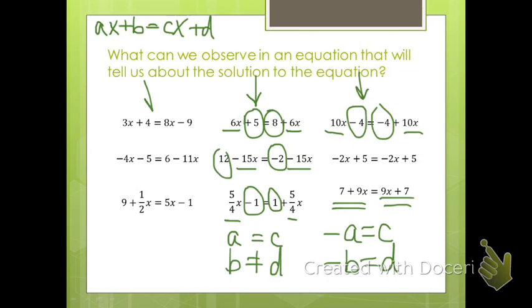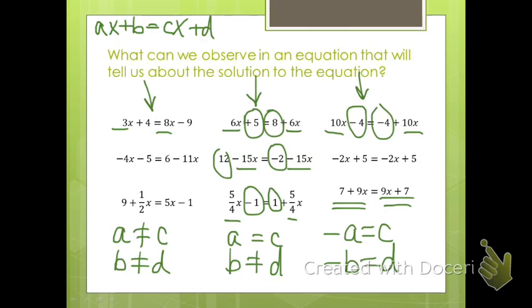For the unique solution column, notice the coefficients of the x terms are different — a is not the same as c. The constants are also different in these cases, but I want to show you an example that helps us see that the constants don't have to be different. So there's a really quick way that we can look at an equation, put it in this form, and then determine what type of solutions that equation will have.